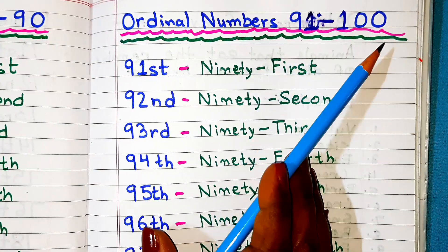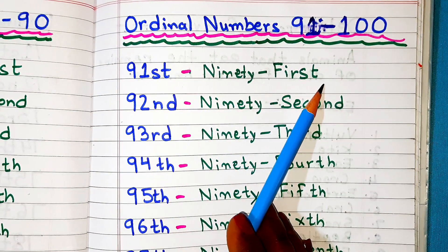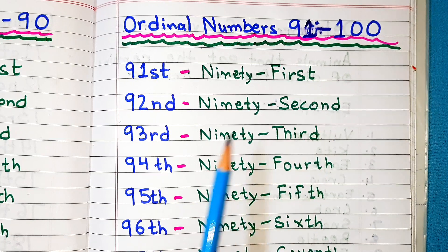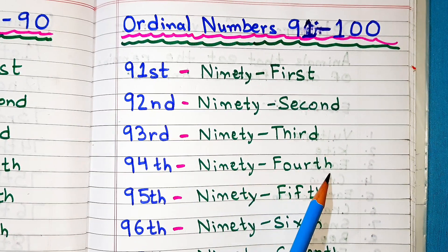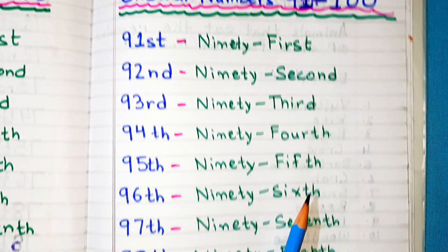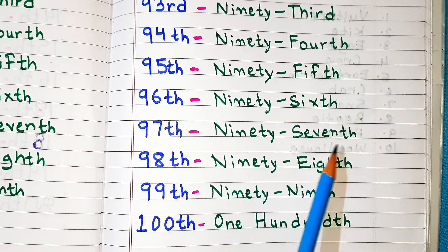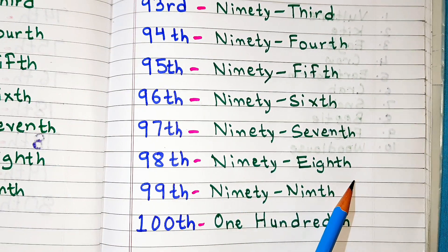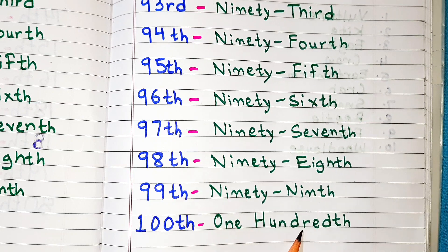Ordinal numbers 91 to 100: 91st, 92nd, 93rd, 94th, 95th, 96th, 97th, 98th, 99th, 100th.